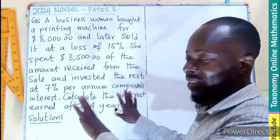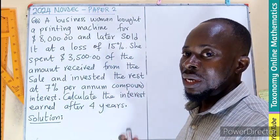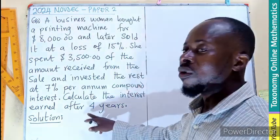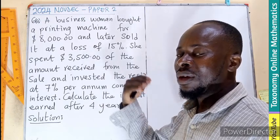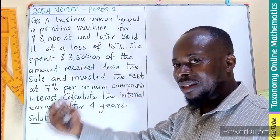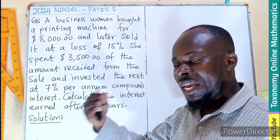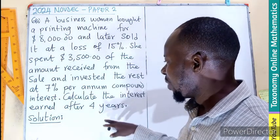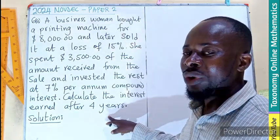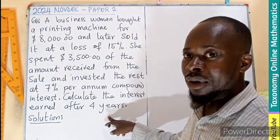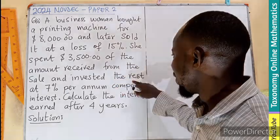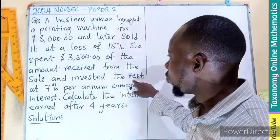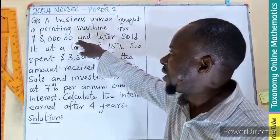We are paying attention to the compound interest compounded for 4 years, which we can calculate year by year or we take a formula. Before we apply that, we need the principal — the money that has been invested, which is the remainder. We don't know that yet, so we need to work that out first.